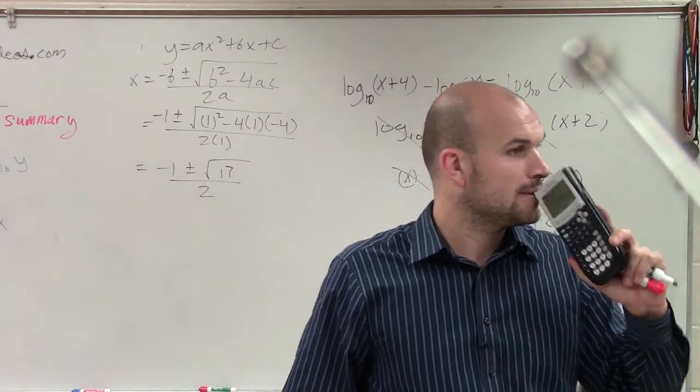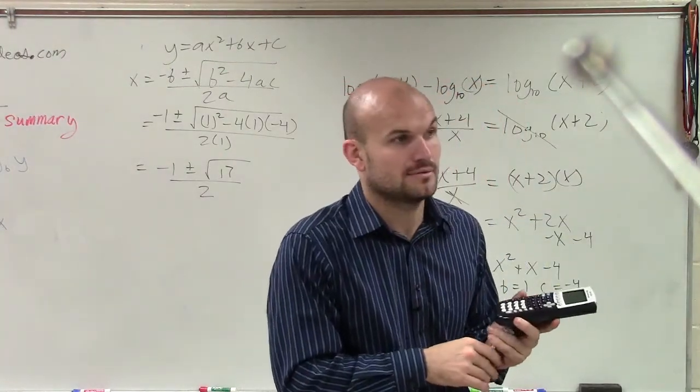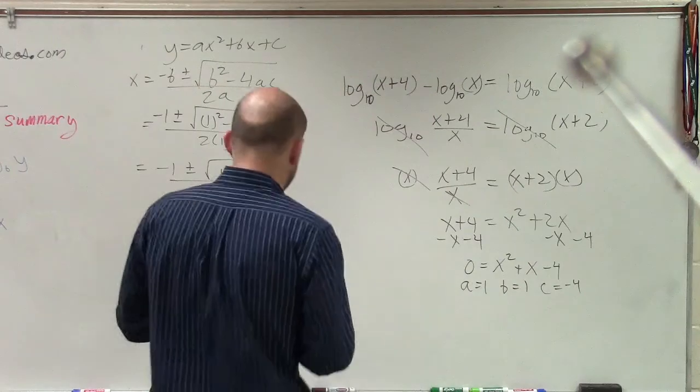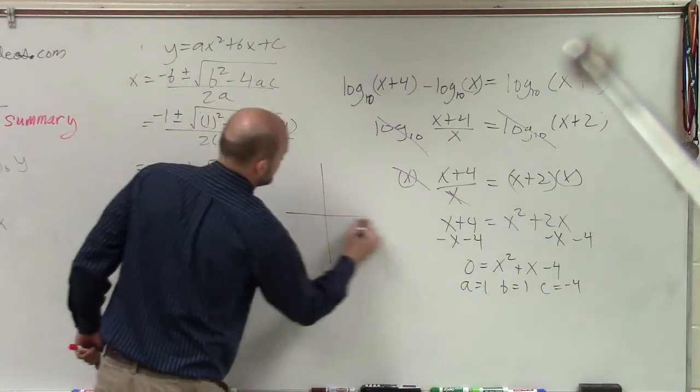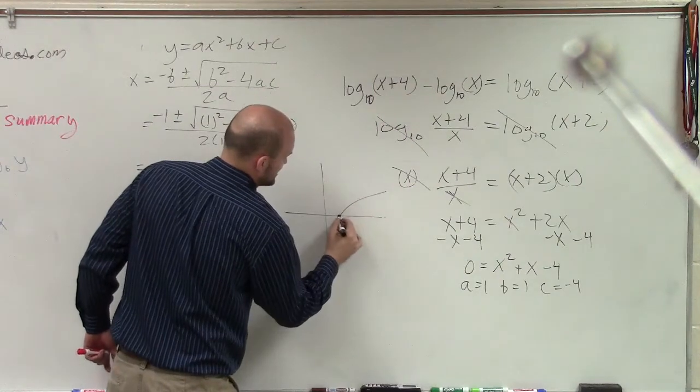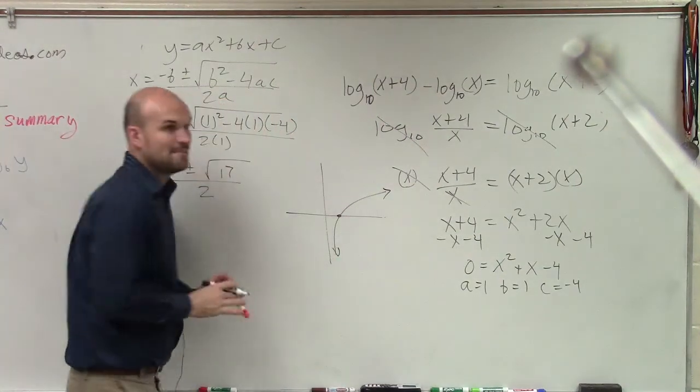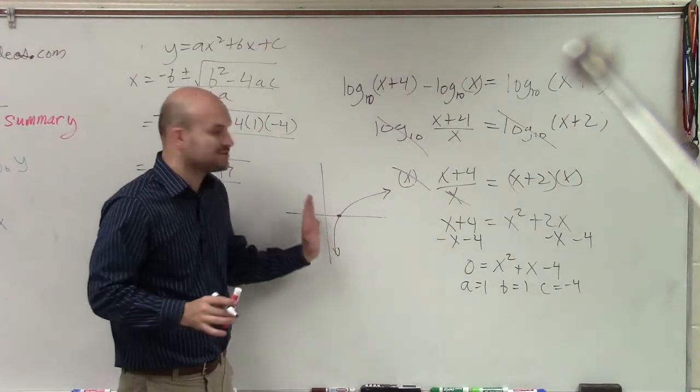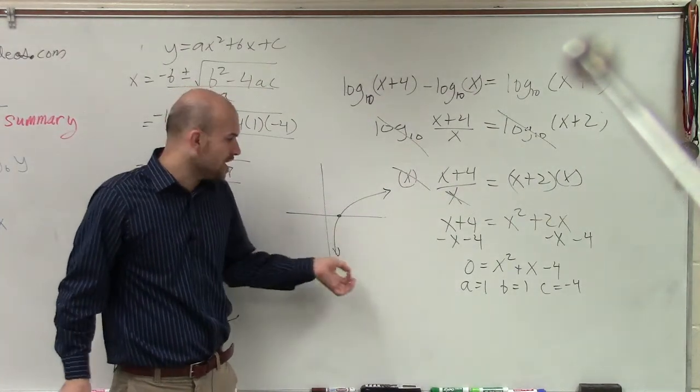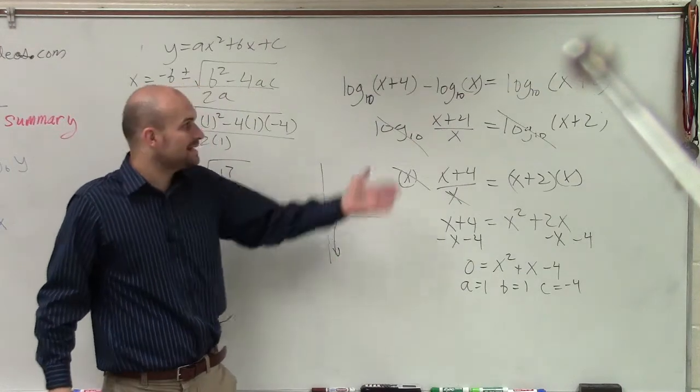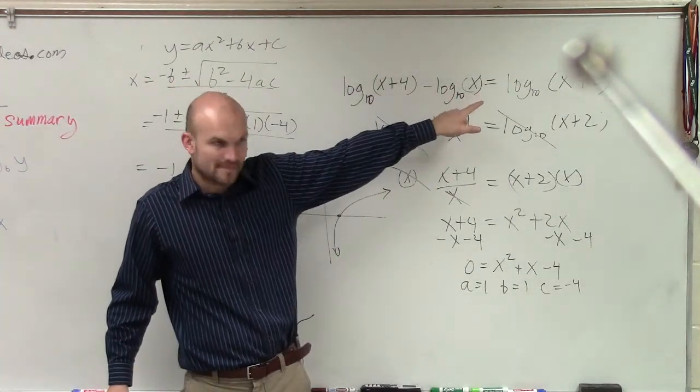Extraneous means it's not a part of the domain, all right? And if you remember, remember when we graphed the logarithmic function, it looked like this, right? And what I meant is those x values, the domain was only restricted to positive numbers, right? So what that meant is, when we're talking about a logarithm, we can only plug in positive numbers. Does that make sense?